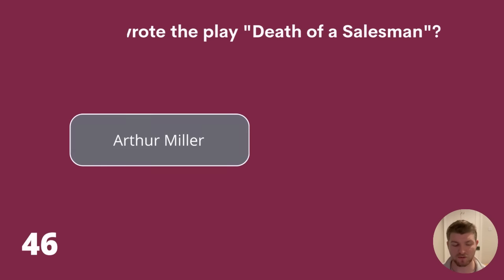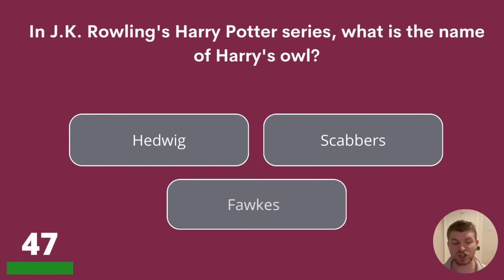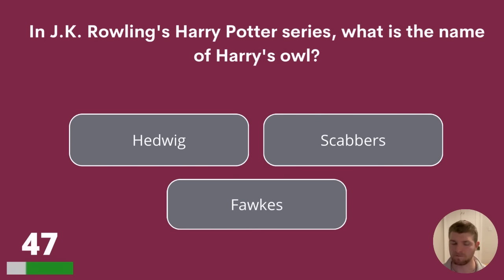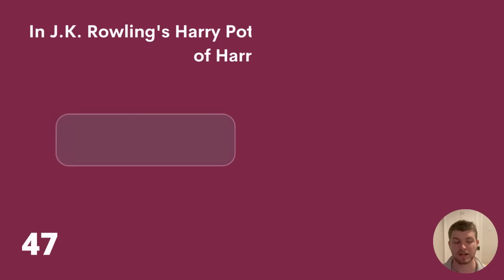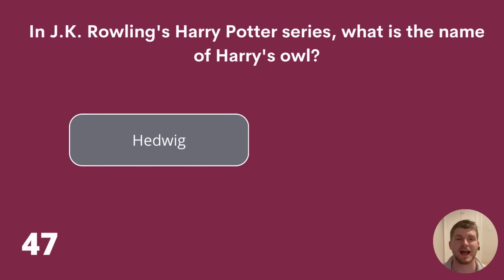Question 47. In JK Rowling's Harry Potter series, what is the name of Harry's owl? Hedwig, Scabbers or Forks? The answer is Hedwig.